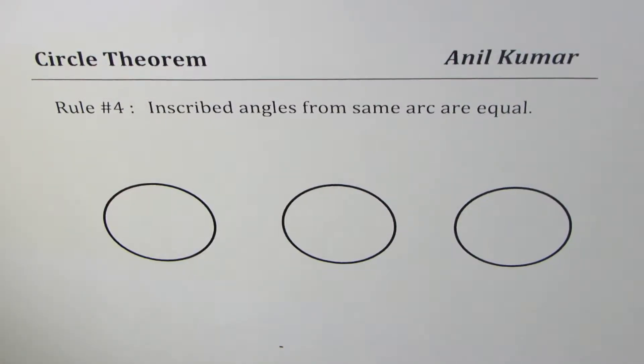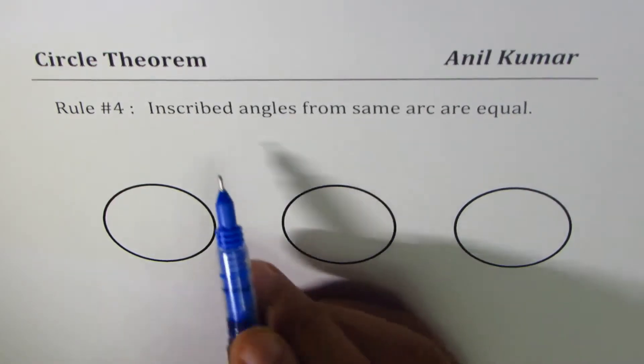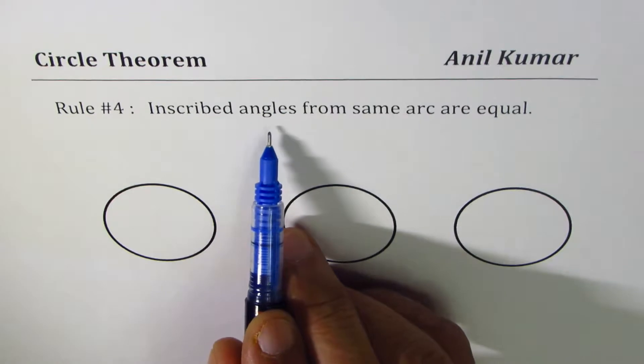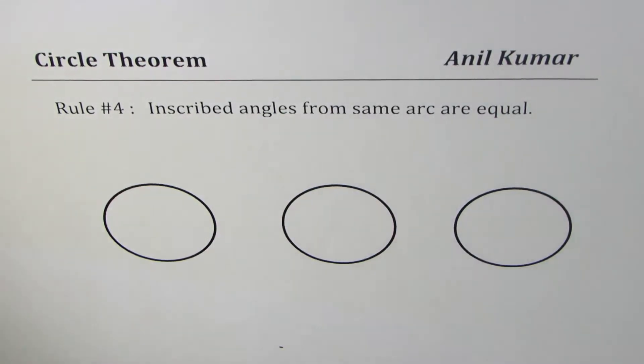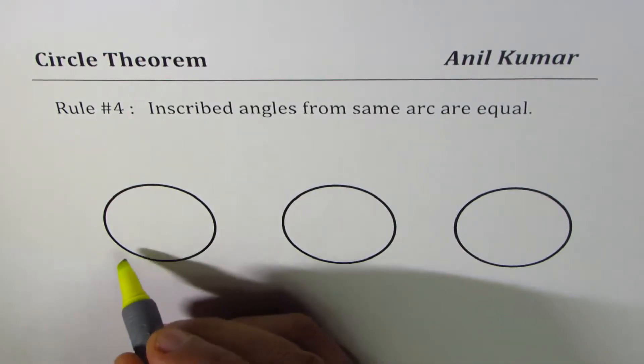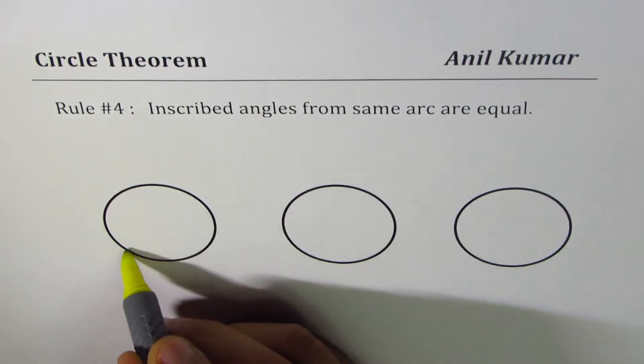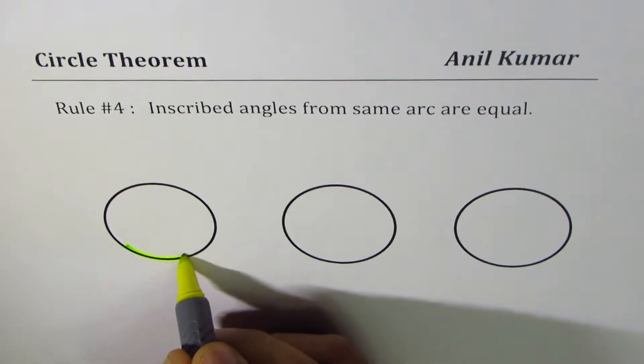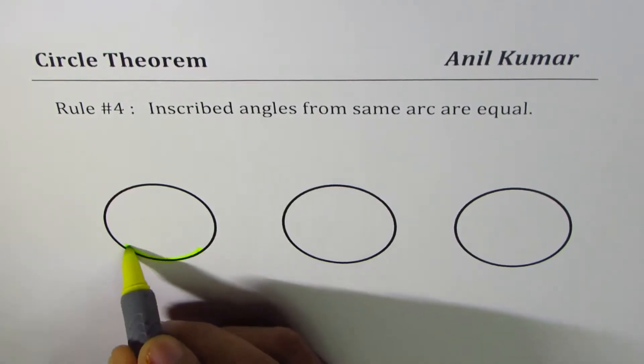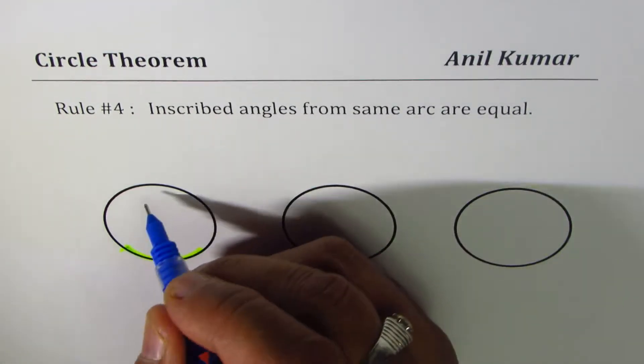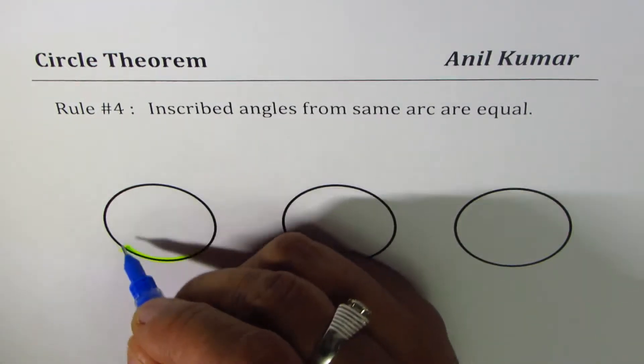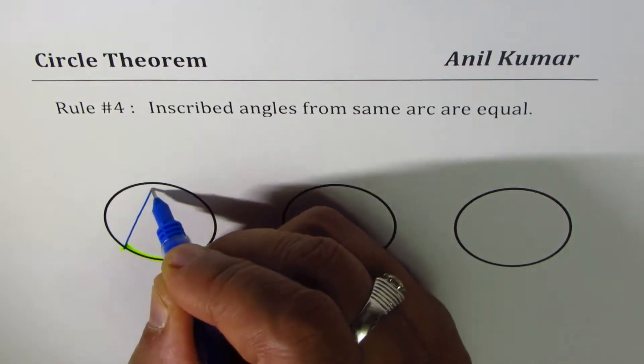I'm Anil Kumar sharing with you rule number four from circle theorem. The rule is: inscribed angles from same arc are equal. Let's consider this circle. If I have this arc, inscribed angle means you take any point on the circumference and then join with the endpoints of the arc.